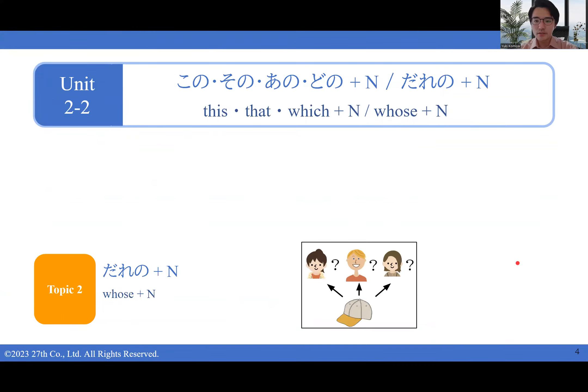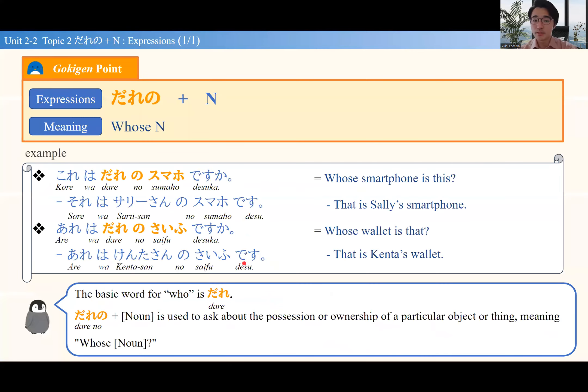Okay, another phrase to follow a noun is だれの, which means 'whose.' It's used for asking who an item belongs to. これはだれのスマホですか—whose smartphone is this? これはサリーさんのスマホです—this is Sally's smartphone. あれはだれの財布ですか—whose wallet is that?